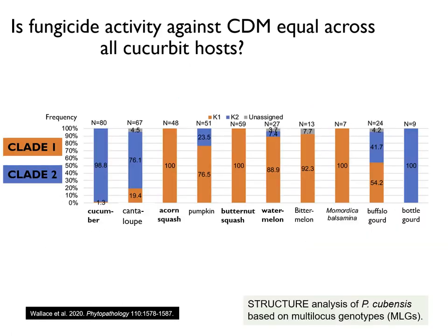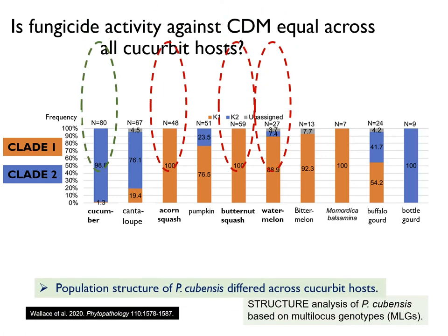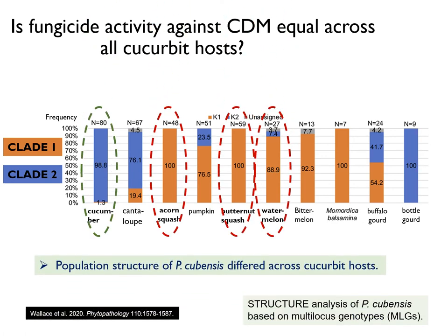Here we show the breakdown of the two P. cubensis clades based on each cucurbit host. The coloration in each bar represents the proportion of isolates classified to each clade. Specifically note how the P. cubensis populations on cucumber differ from other cucurbit crops like acorn squash, butternut squash, and watermelon. This is clear evidence that P. cubensis populations vary across different cucurbit hosts.